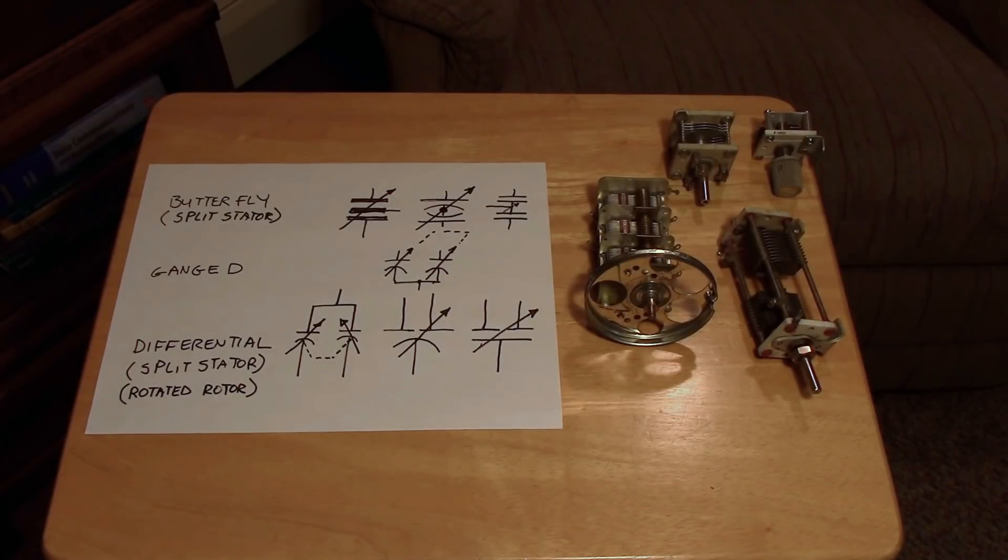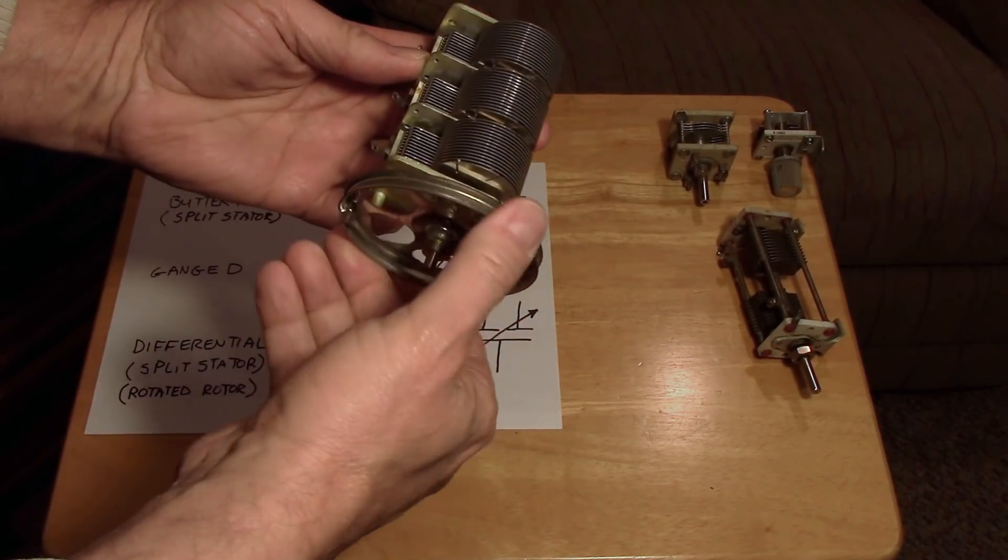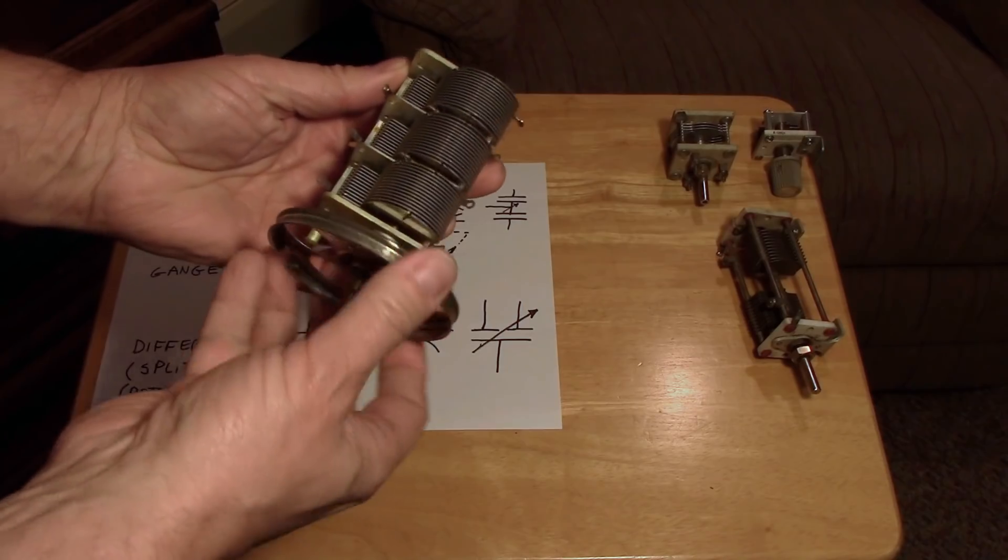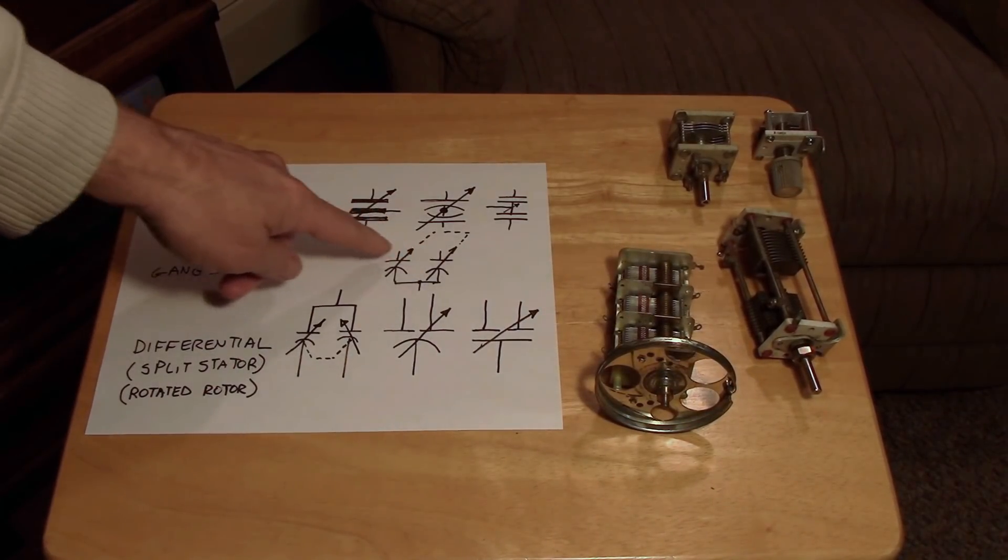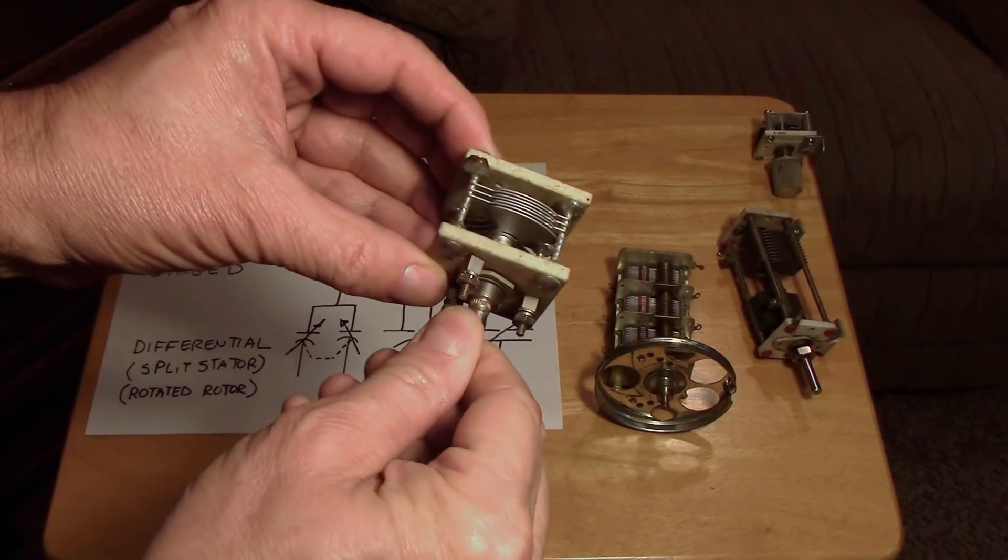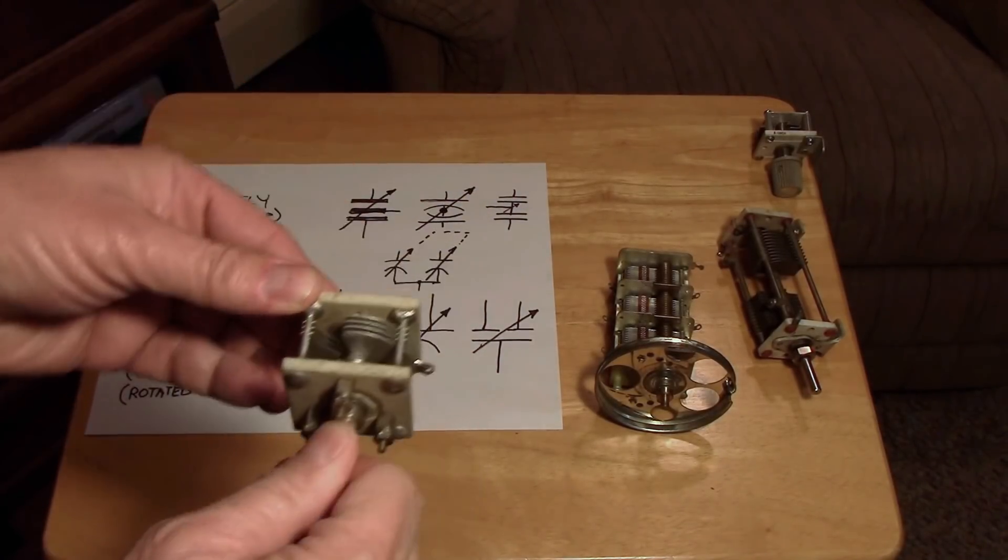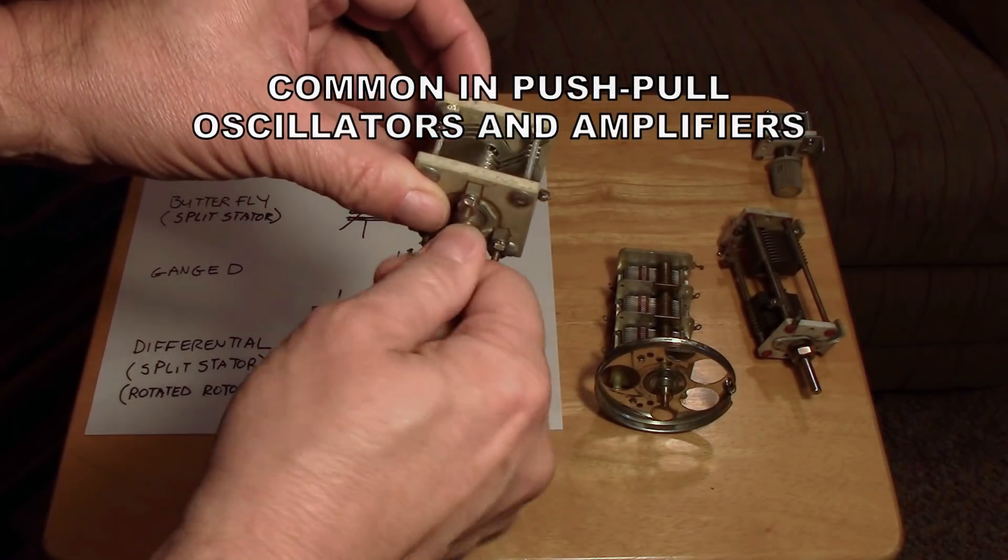Let's talk about variable capacitors. First, the classic ganged capacitor—you're all familiar with these. It has three separate stators and a common rotor grounded to the frame. You might also be familiar with the butterfly capacitor, which has a split stator and the rotor is common.